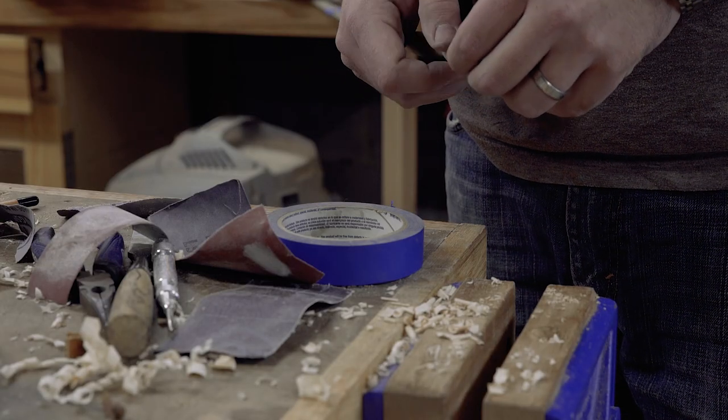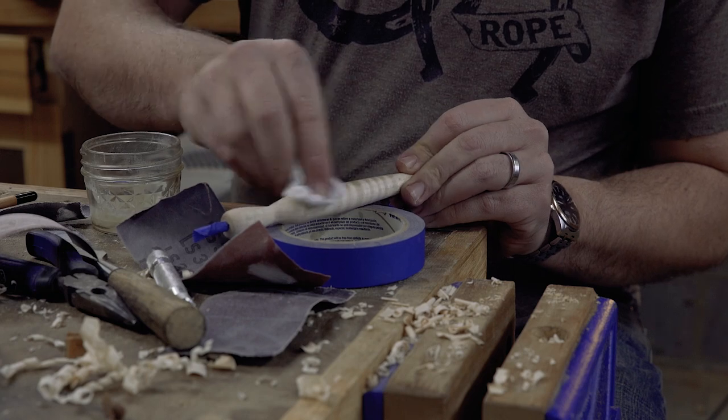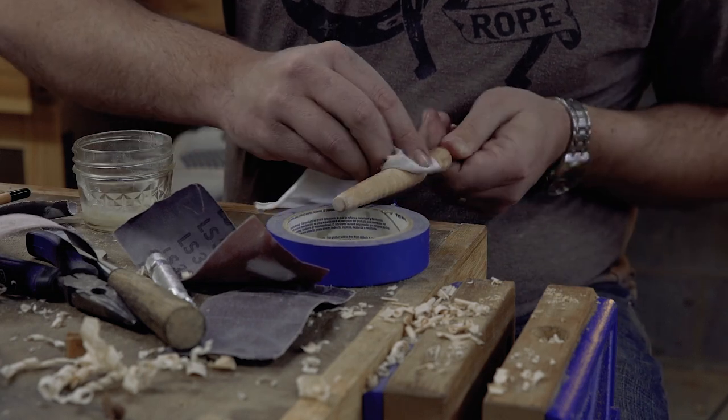Then I rubbed some homemade finish on the pen. I used this for bowl turning. It's just a mixture of mineral oil and beeswax.